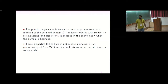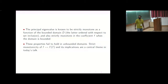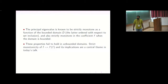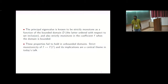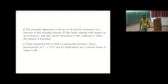For bounded domains, the principal eigenvalue is known to be a strictly monotone function of the domain—ordered by set inclusion—and also strictly monotone in the coefficient F: if F is strictly less than G, then lambda star F is strictly less than lambda star G. These properties fail to hold in unbounded domains. The strict monotonicity of the map F to lambda star F, and its applications, will be a central theme in today's talk.